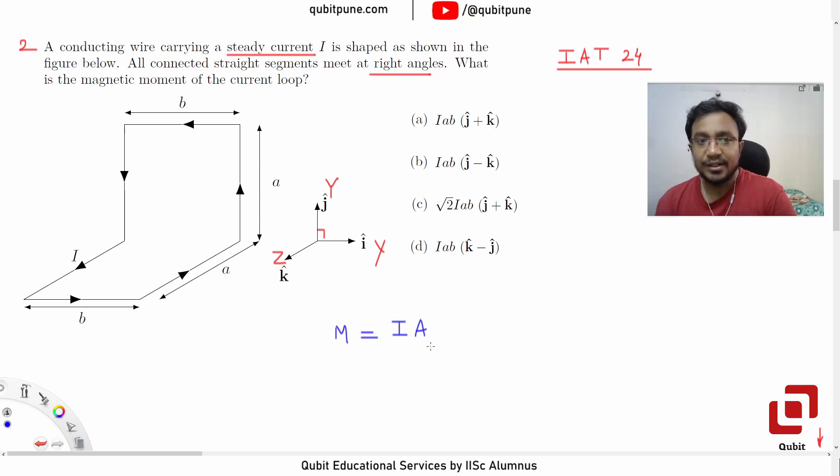But in this particular case, our loop doesn't appear to be planar. It is spread partly in the X-Y plane and partly in the Z-X plane.